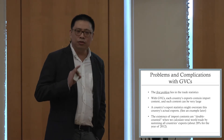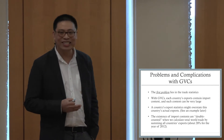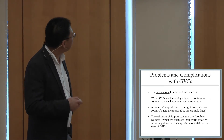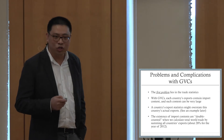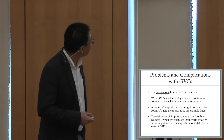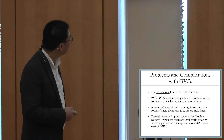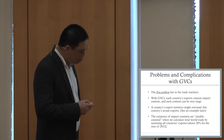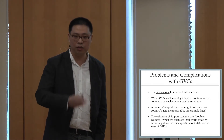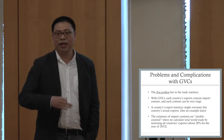But there are also problems and complications with global value chains. The first problem lies in trade statistics. With global value chains, since each country's exports contain import content — and such content can be extremely large — a country's export statistics might really overstate that country's actual exports. When you look at a country's export statistics from customs, that's the export value of the final goods, but if your export value contains a lot of import content, it gets fuzzy.